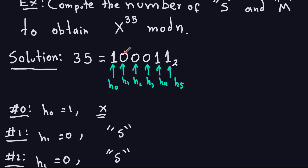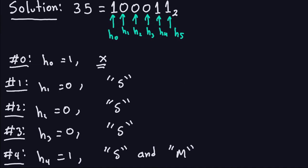Every time you encounter a 0, you just do a squaring. So when I have h1, which is the next one, I square. The next one h2 is also a square, and the next one h3 is also a square. So I have three squares here corresponding to these three steps — for every 0, you square. And every time you encounter a 1, you do two operations in this order: square first, and then multiply.